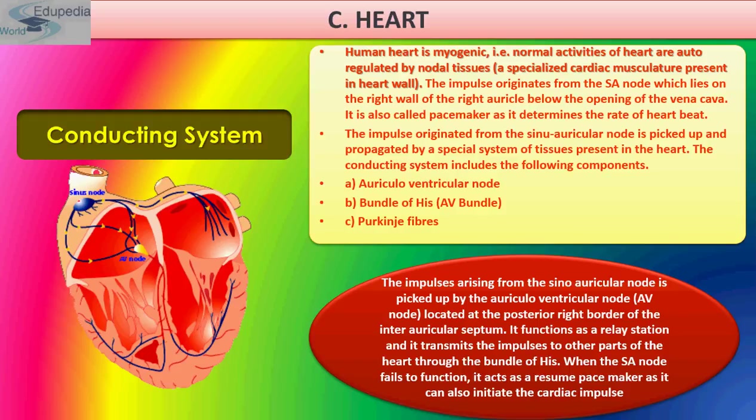The contraction of the heart starts at the sinoatrial node, i.e. the SA node. It is made up of special muscle cells placed over the nerve endings. The node is placed in the wall of the right auricle near the opening of the superior vena cava. It performs the function of starting each heartbeat, and hence the sinoatrial node is called the pacemaker.